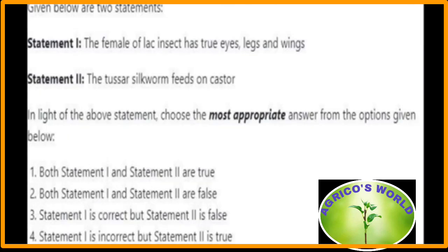Given below are two statements. Statement 1: the female lac insect has true eyes, legs, and wings — no, the lac insect does not have true eyes, legs, and wings, so statement 1 is false. Statement 2: the Tasar silkworm feeds on castor — no, the Tasar silkworm does not feed on castor, so statement 2 is also false. The most appropriate option is option two: both statement 1 and statement 2 are false.